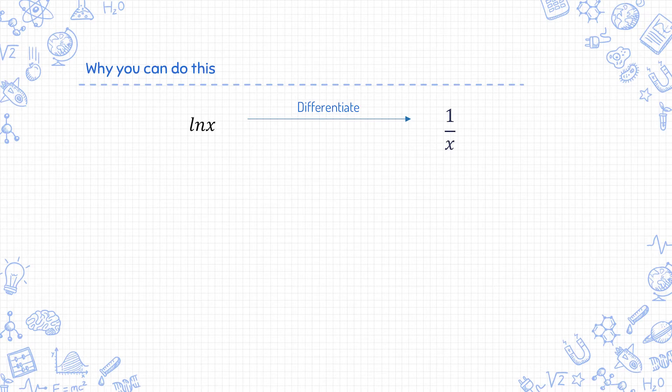Why can you do this? How do you do this? And when do you do this? When you differentiate ln x, you get 1 over x. Conversely, if you integrate 1 over x,